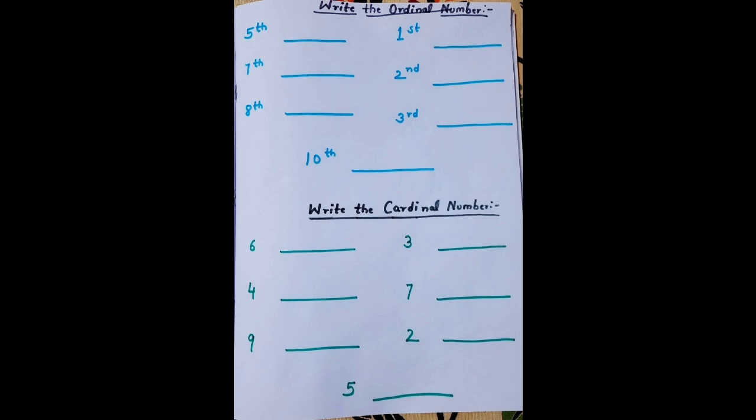This is the last worksheet of the ordinal number. Some ordinal numbers are given but the spellings are not written, so the kid needs to write the particular ordinal number spellings and complete the worksheet. This worksheet also includes cardinal numbers.